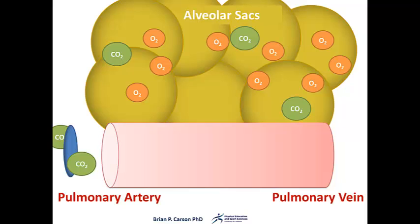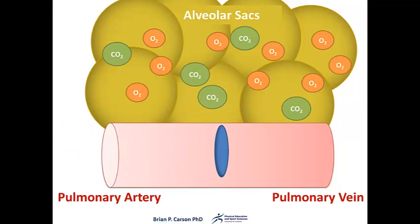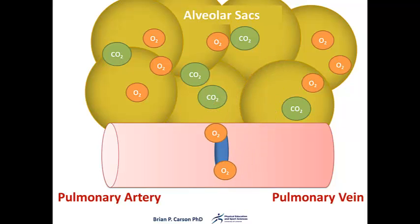Carbon dioxide moves from the capillaries out to the alveoli, and oxygen moves from the alveoli into the capillaries. Oxygen then binds to hemoglobin on the erythrocyte to form oxyhemoglobin, depicted by the change in colour from blue to red.